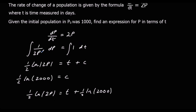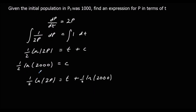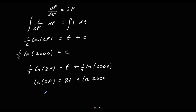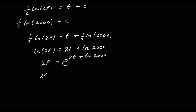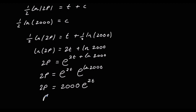We want to find an expression for P in terms of t. Multiplying everything by 2: ln(2P) = 2t + ln(2000). Exponentiating both sides: 2P = e^(2t + ln(2000)) = e^(2t) × e^(ln(2000)). Since e^(ln(2000)) = 2000, we get 2P = 2000·e^(2t). Dividing both sides by 2 gives the final answer: P = 1000·e^(2t).